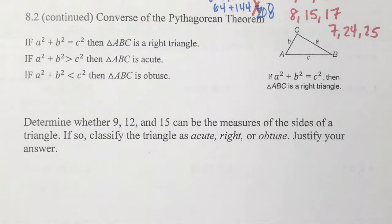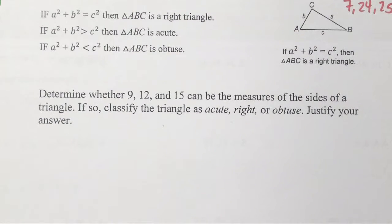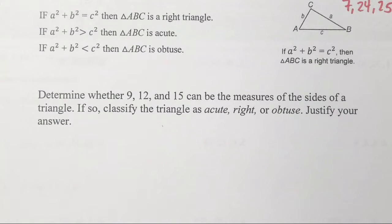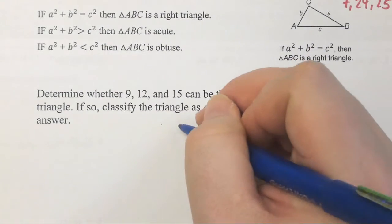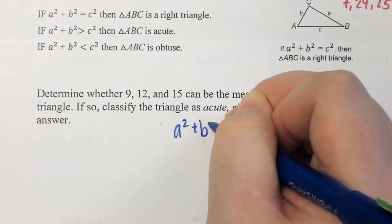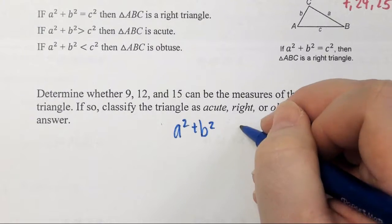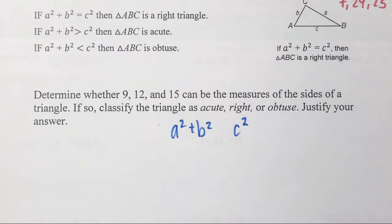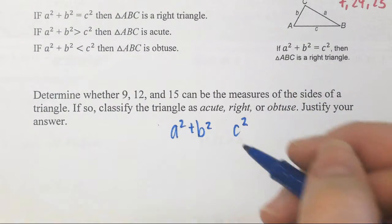Today we're going to continue using the Pythagorean Theorem. Someone remind me what the Pythagorean Theorem says. If you've never talked in math class and I've never heard your voice, today would be the day. So, a squared plus b squared. We normally do equal c squared. I'm not going to write in the equal right now.